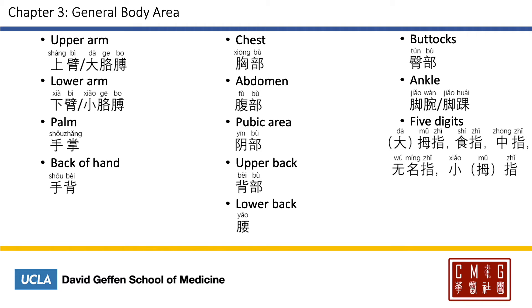For the five digits: thumb will be 大拇指 or simply 拇指; the index finger 食指; middle finger 中指; ring finger 无名指; and little finger 小拇指 or 小指.